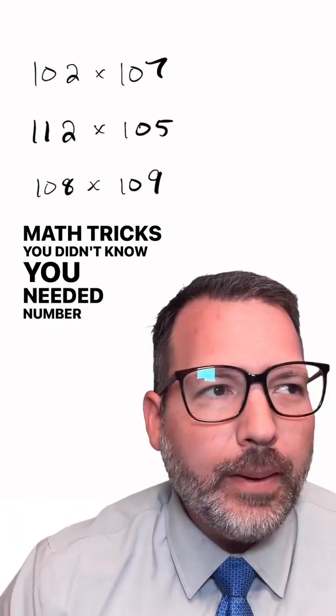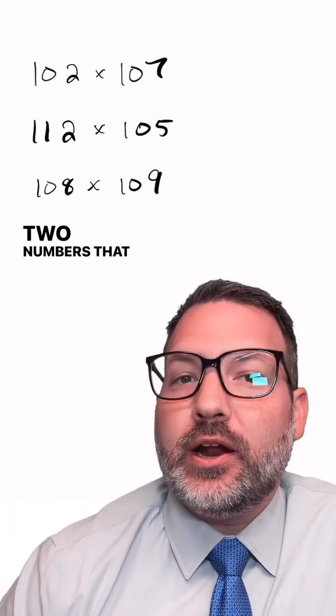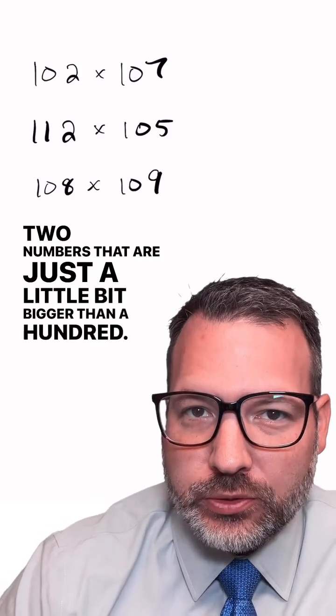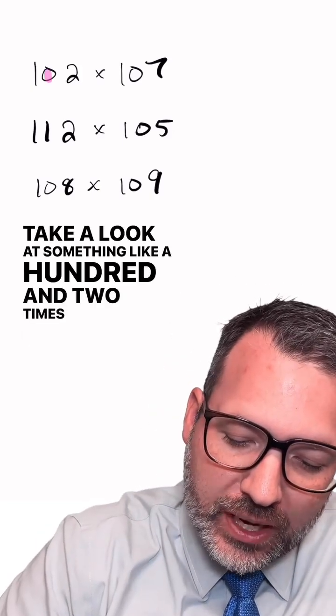Math tricks you didn't know you needed. Number one, multiplying two numbers that are just a little bit bigger than 100. Take a look at something like 102 times 107.